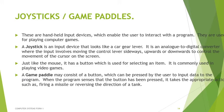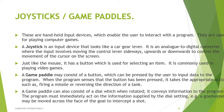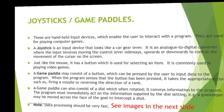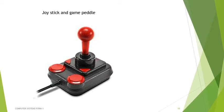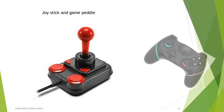A game paddle may consist of a button pressed by the user to input data — for example, firing a missile or reversing a tank's direction in a game. It can also consist of a dial which, when rotated, conveys information to the program — for example, moving a goalkeeper across the goal to intercept a shot.